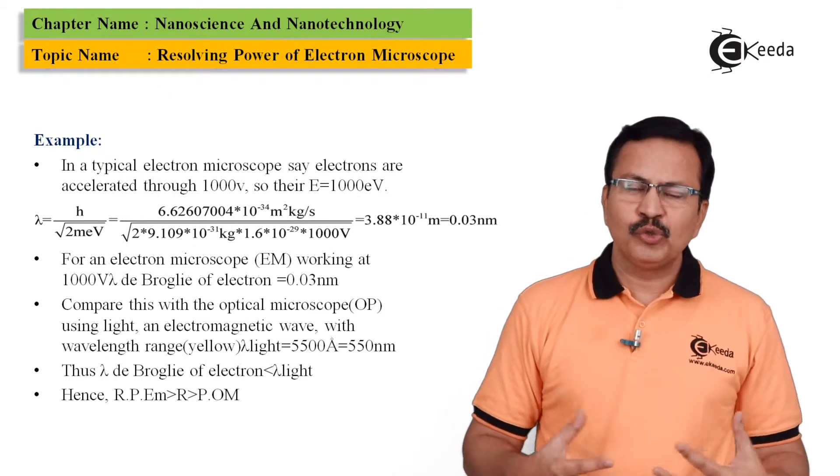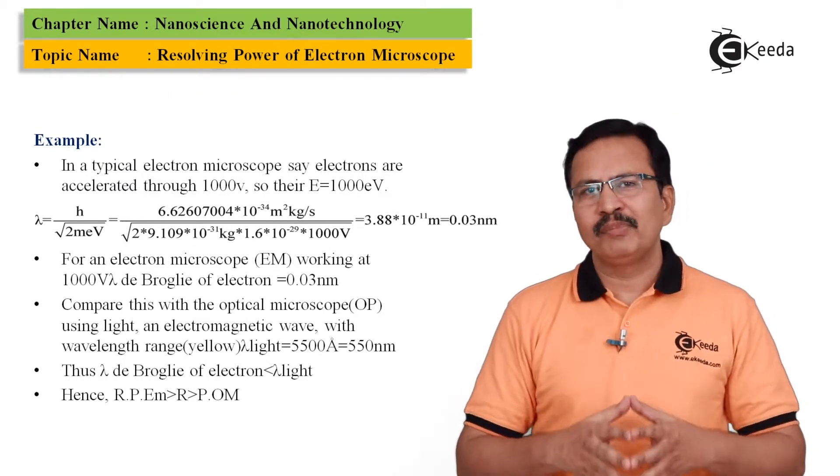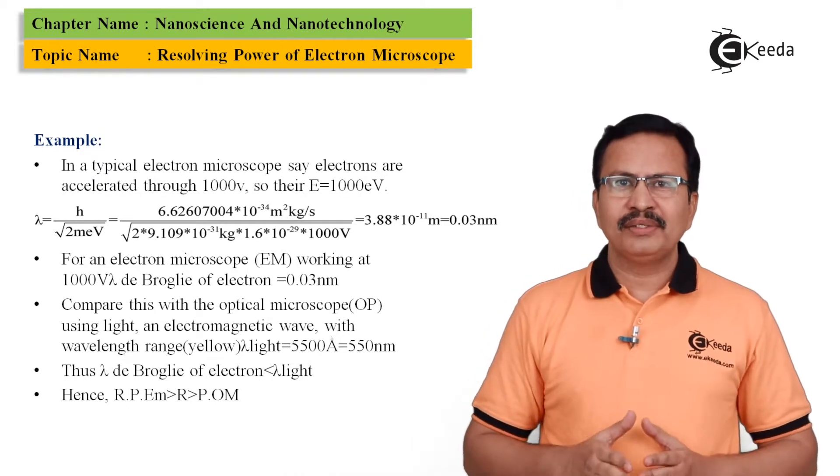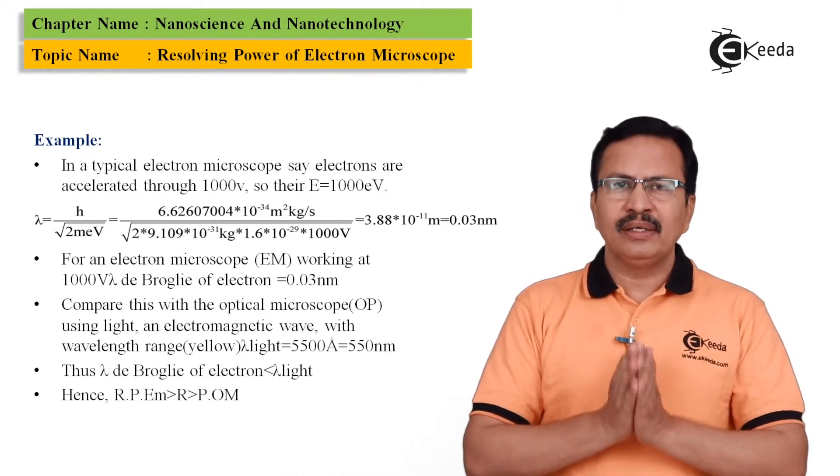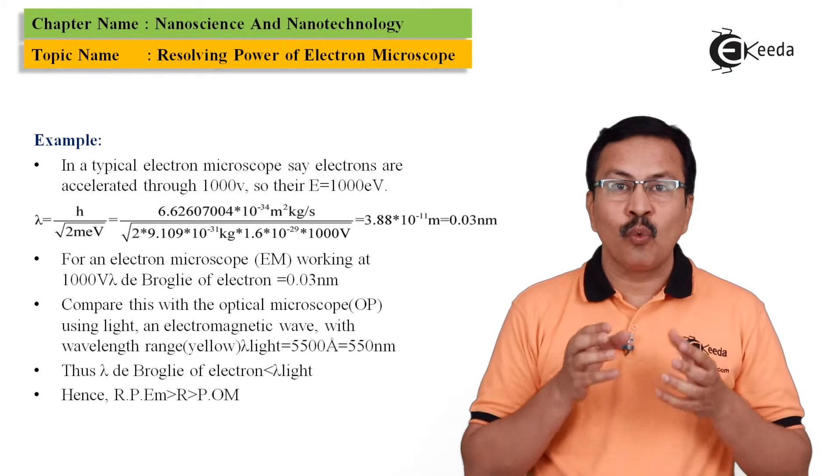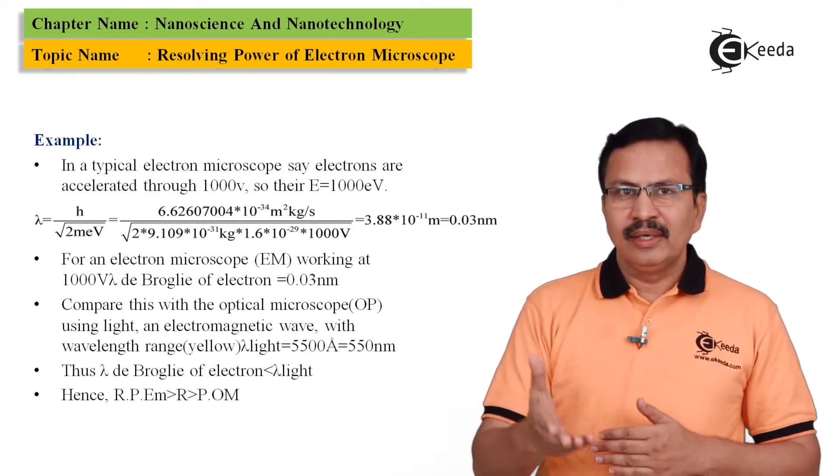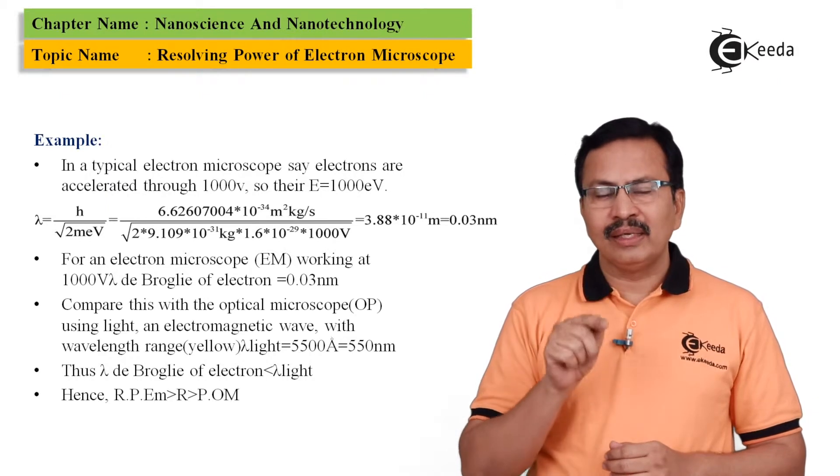So now let us assume, let us take a very concrete example of, let us say, the value of the accelerating electric field in volts is 1000 volts, which is also written in terms of 1 kV.